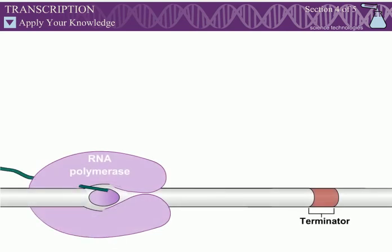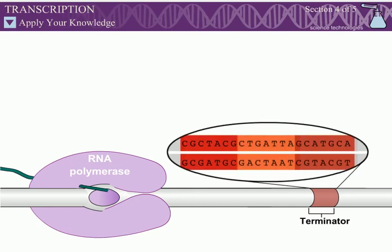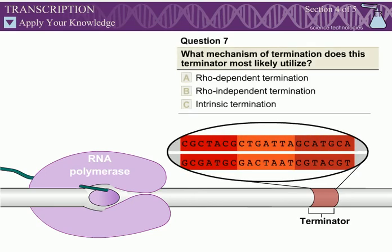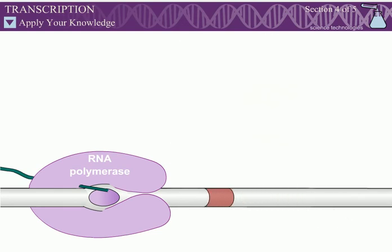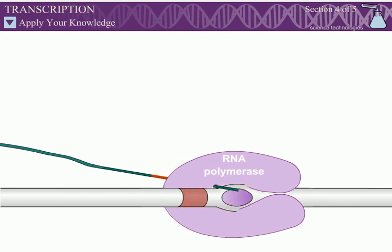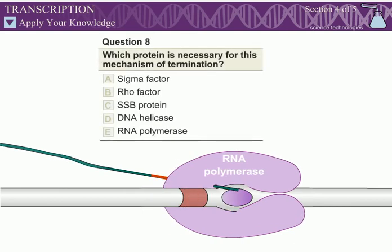Termination: Help this bacterial RNA polymerase dissociate from the DNA. Question 7: What mechanism of termination does this terminator most likely utilize? Question 8: Which protein is necessary for this mechanism of termination?